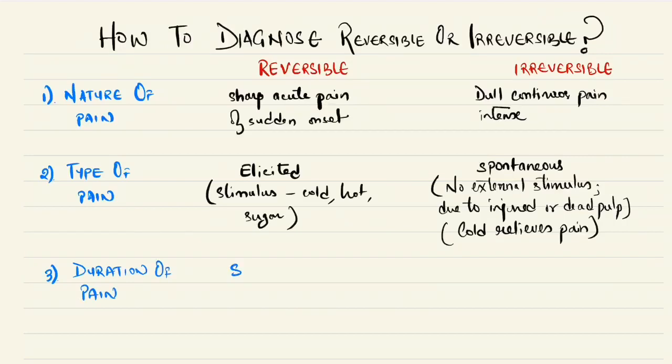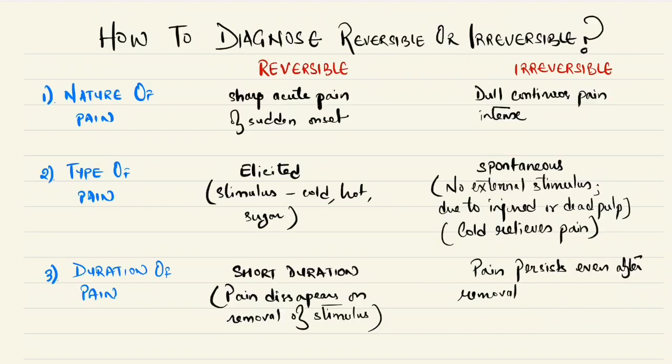Now the third category is duration of pain. If the pain is of short duration, that is the pain disappears when there is removal of stimulus, then it is reversible pulpitis. However, if the pain persists even after removal of stimulus, that is prolonged pain, then it is irreversible pulpitis.